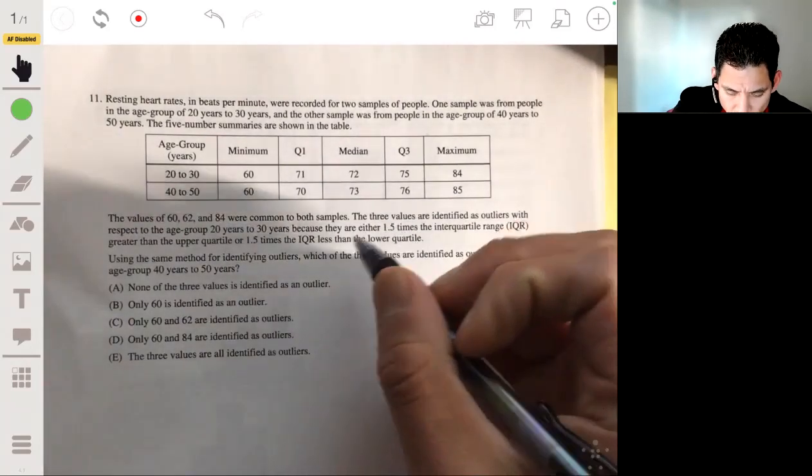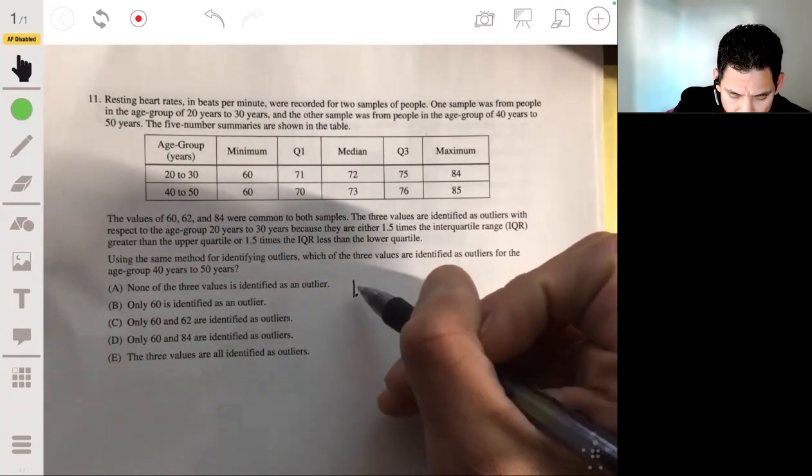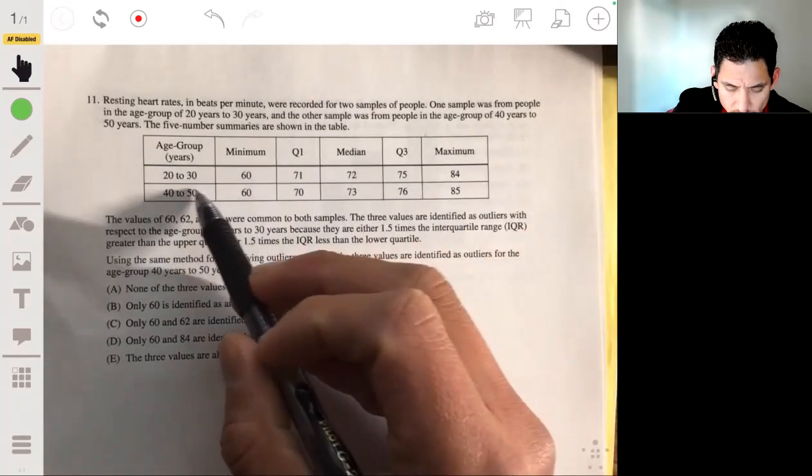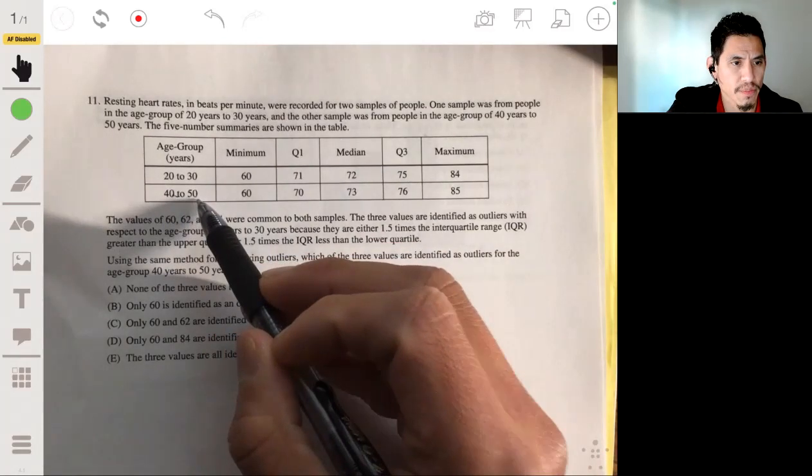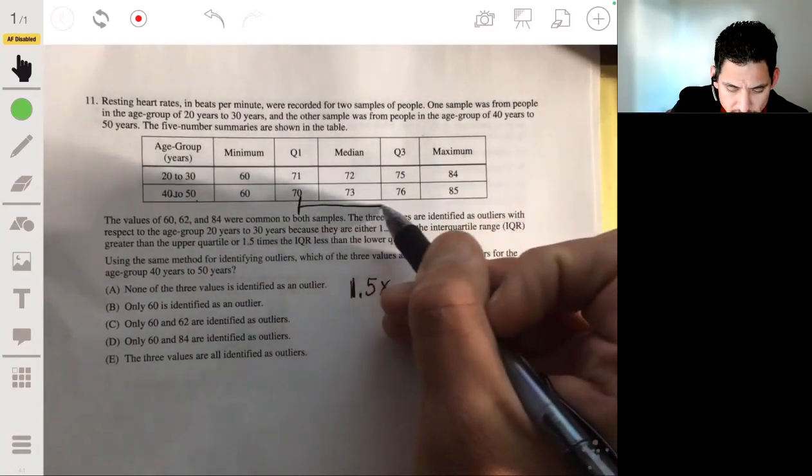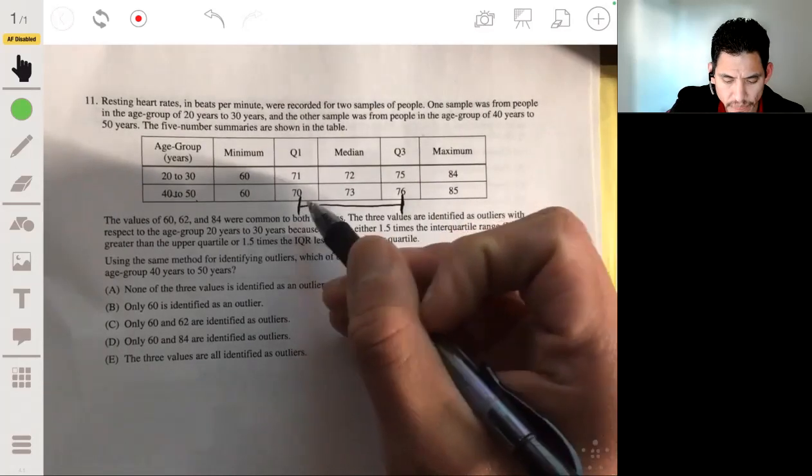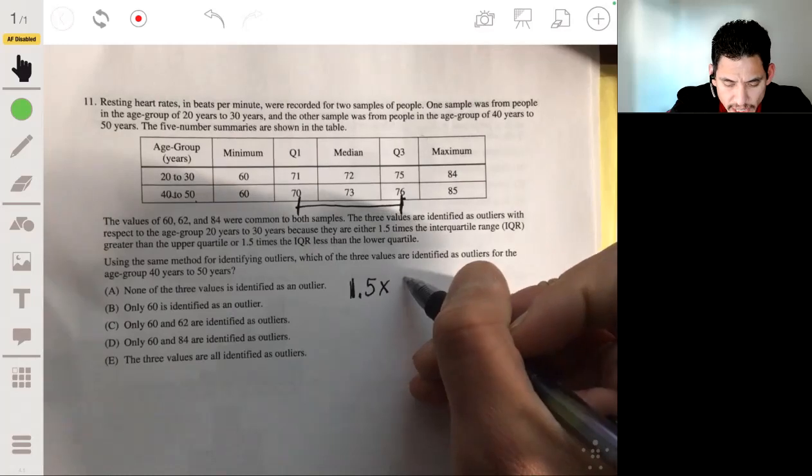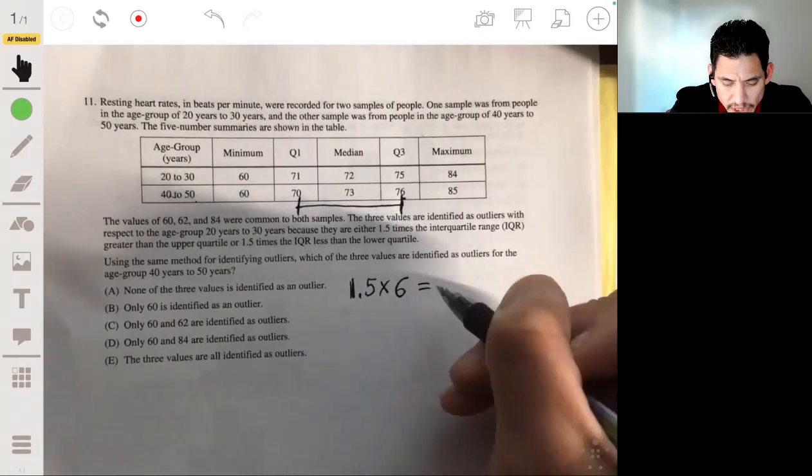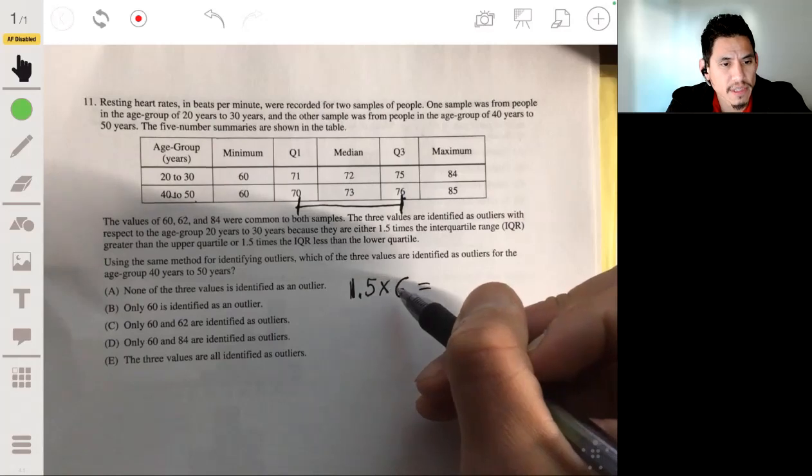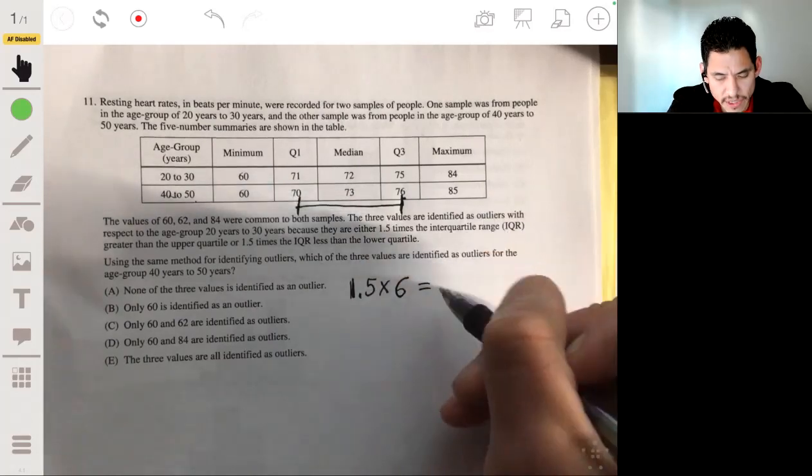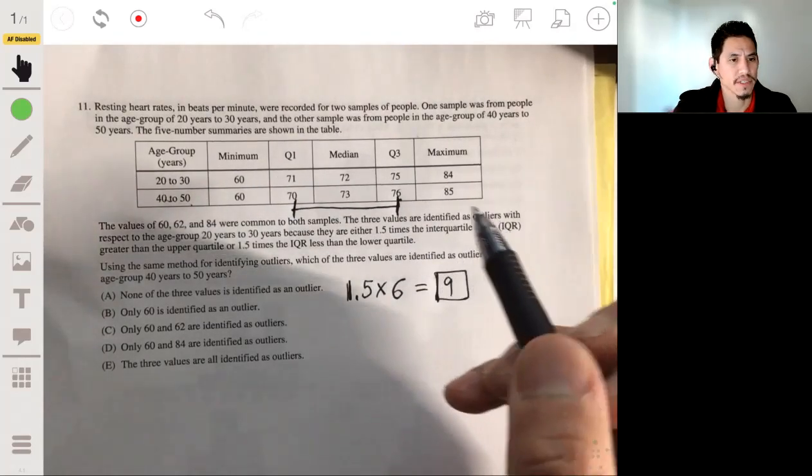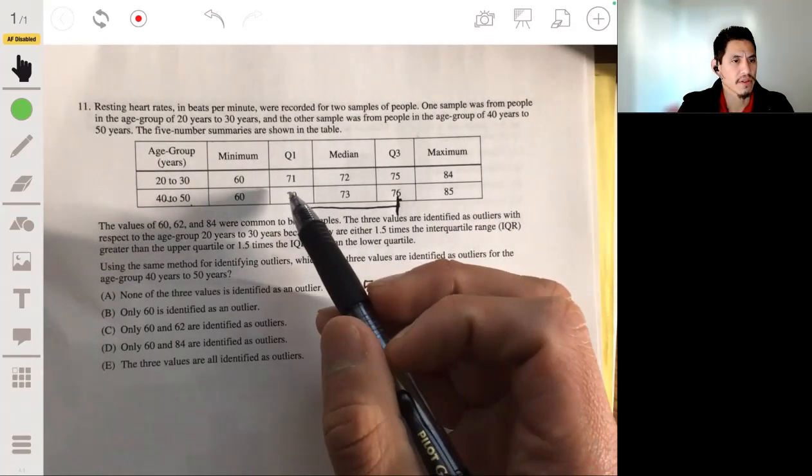Okay, so we want to find what 1.5 times the IQR of the 40 to 50 year old group would be. So let's remember the IQR is the distance from Q1 to Q3, so 70 to 76, and that'll be 6. The IQR or the 1.5 times the IQR is 1.5 times 6, which is 9.